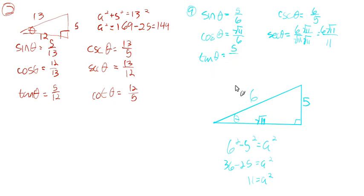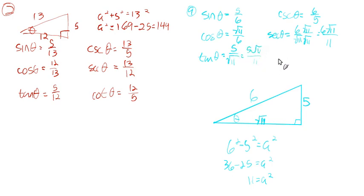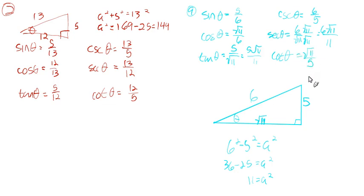So the tangent is the opposite over the adjacent — it's 5 over √11. We rationalize the denominator and get 5√11 over 11. And then the cotangent, which is the reciprocal of the tangent — we just take the reciprocal and get √11 over 5.